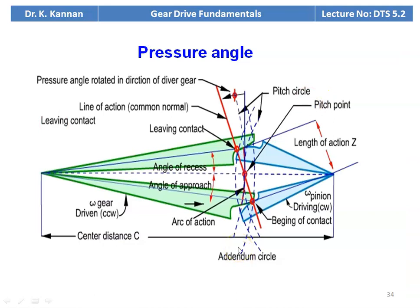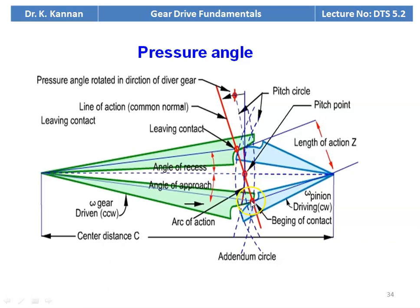Look at the diagram. The pressure angle phi is mentioned here, and this is how the pressure angle is measured. We draw a tangent — the blue color line. The larger wheel is the gear and the smaller wheel is the pinion. We have the pitch circle of the gear and the pitch circle of the pinion. At the point of contact, we draw a tangent to the pitch circle.